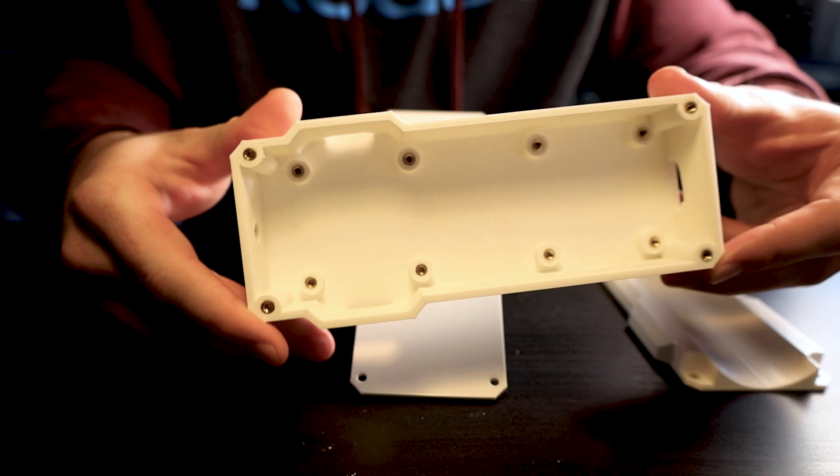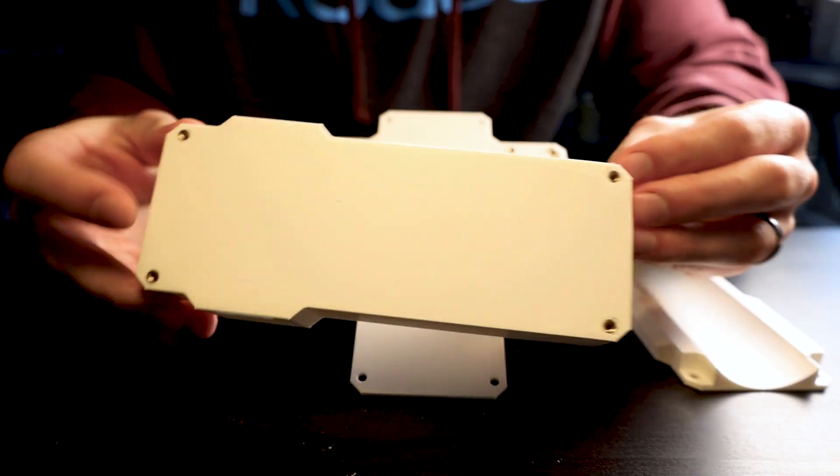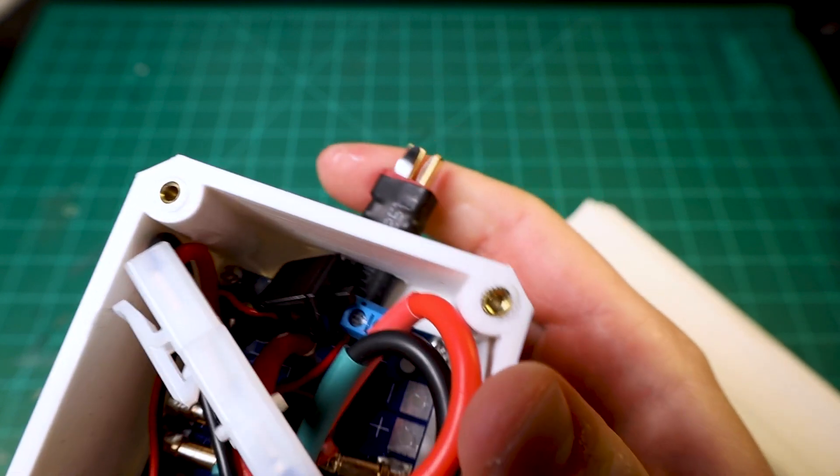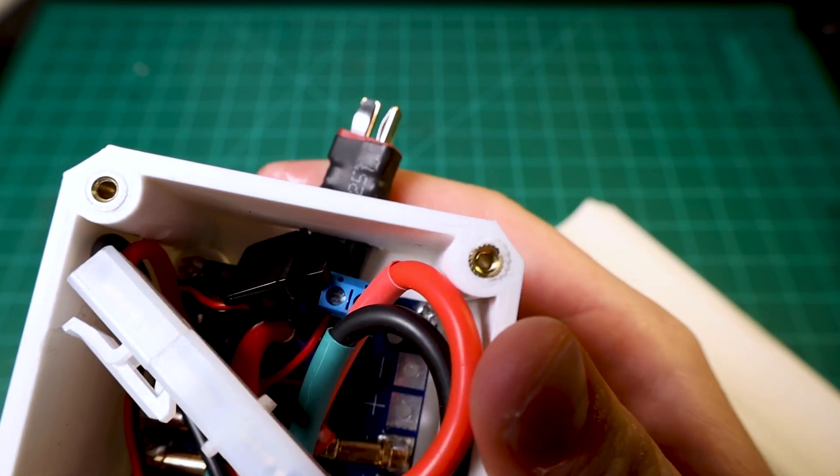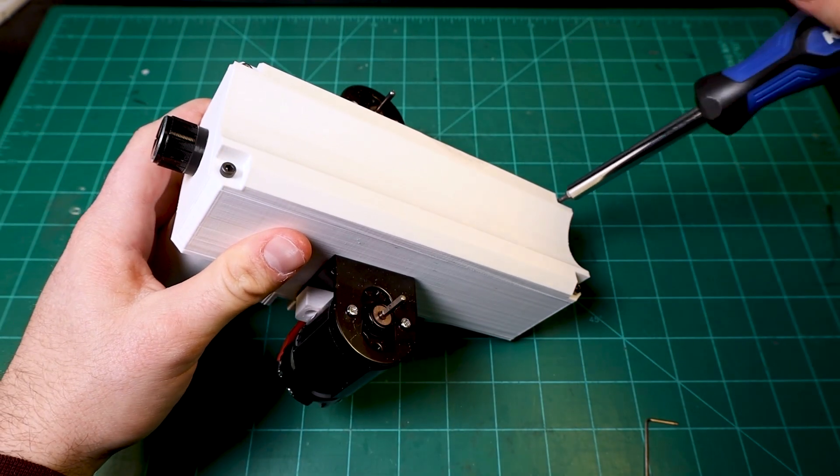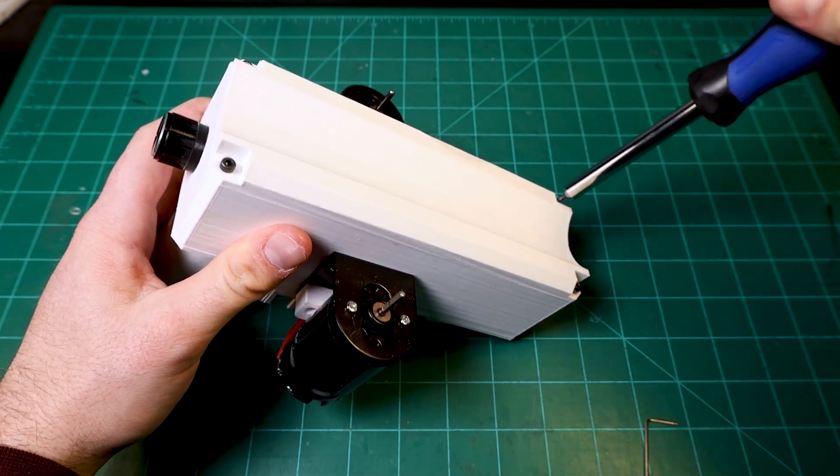But even with those downsides in mind, this is still my favorite method of joining two or more parts together because it results in a super strong connection while still allowing for the parts to be disassembled if needed. Plus I think the brass inserts make my parts look professionally manufactured, which is usually a nice touch.